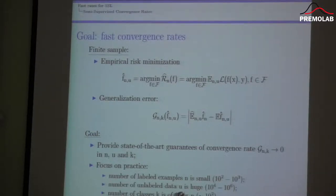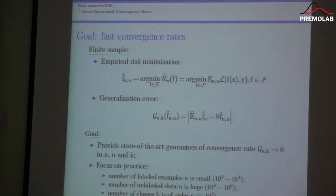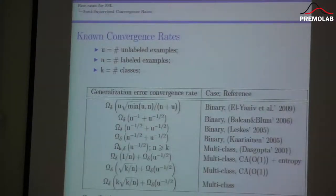Now we want to see the rates of convergence when you have a huge amount of data. This is really motivated by practice because in ImageNet database you have about one million images, but there are not so many labeled examples in real practical problems — the situation is exactly the same. What happens for convergence rates in this situation?